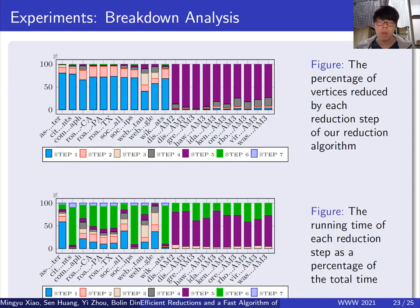We also remark here that, if we change the order of reduction steps, we may get results different from the figures. For example, if we apply step 5 to reduce unconfined vertices in the first step, then it will reduce much more vertices. However, the running time may increase.